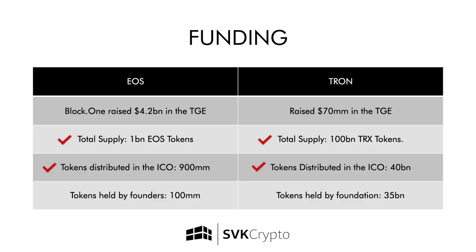We can see this in the token supply. The Tron Foundation owns roughly 35% of the total supply right now, whereas Block.one owned 10%. So in terms of a Delegated Proof of Stake network, Tron is significantly more centralized than EOS is. Furthermore, because of the superior capitalization of Block.one, they've been able to really advance the protocol in many different verticals all at the same time, and we can see this from the bi-weekly updates we get from the Block.one development team.